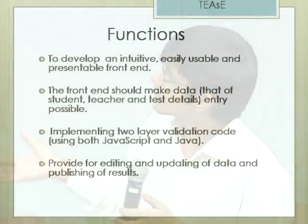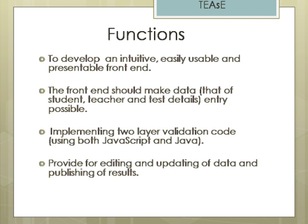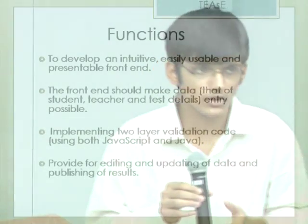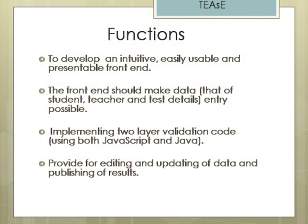The front-end supports data entry for students, teachers, test details, classrooms, and groups. We implemented two-layer validation using both JavaScript and JAAS. For example, if a person enters a name in a roll number field, an error message is displayed. Even if someone accesses the main server with JavaScript disabled or an earlier version, the JAAS server-side validation ensures no wrong entries are made in the database.